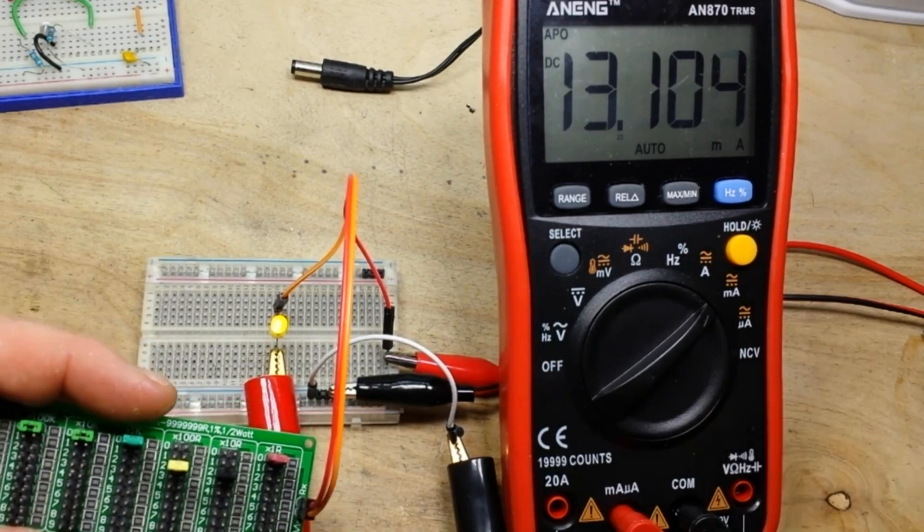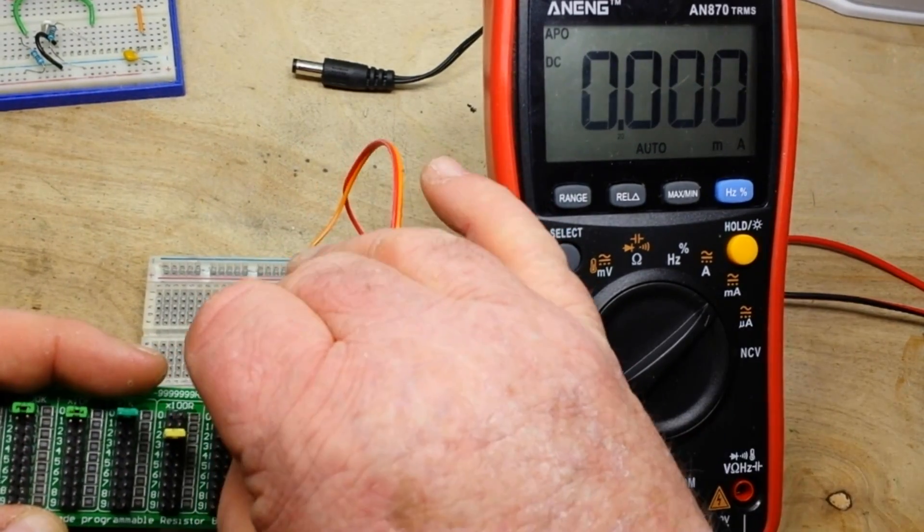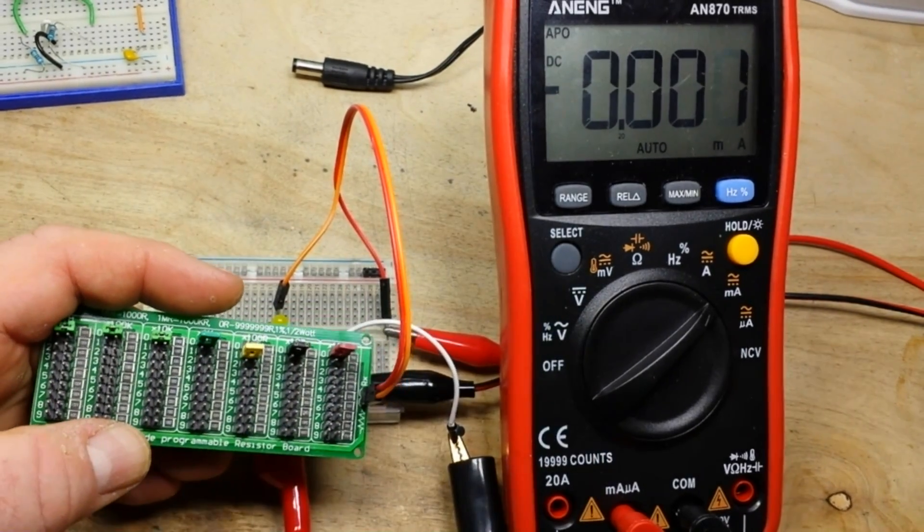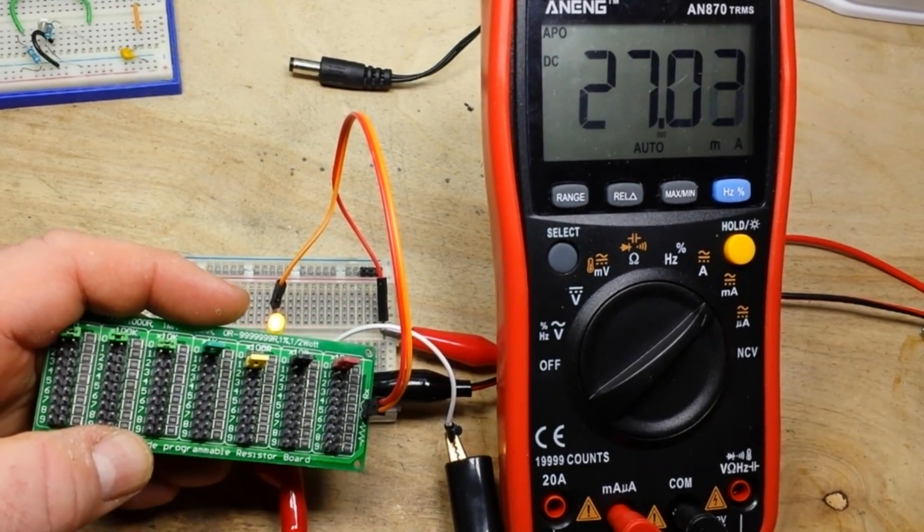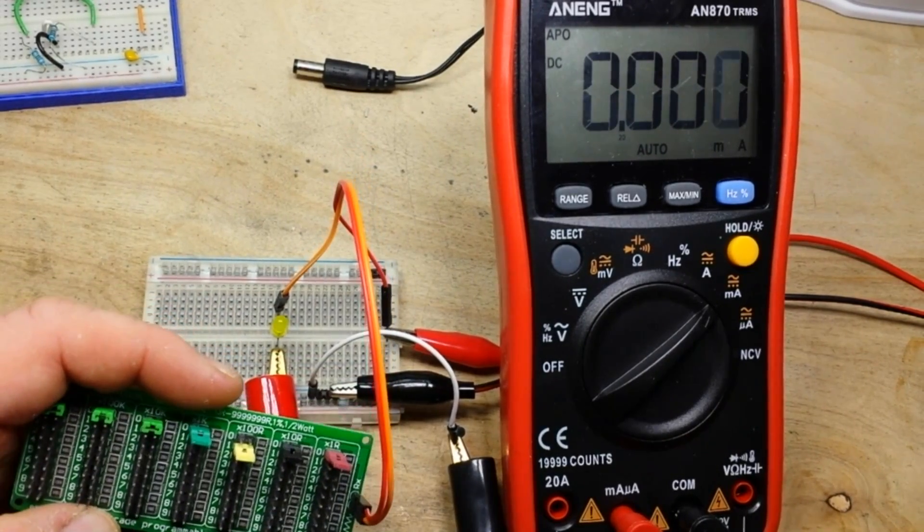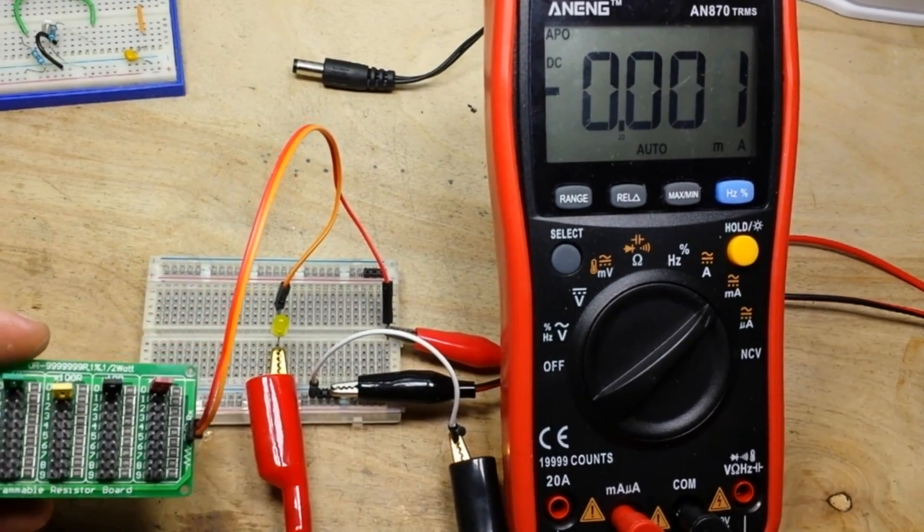You could go higher. You could go up to 100. We'll do that. There's 100 ohms. See, now you're too high. So, it's an easy way to play around.